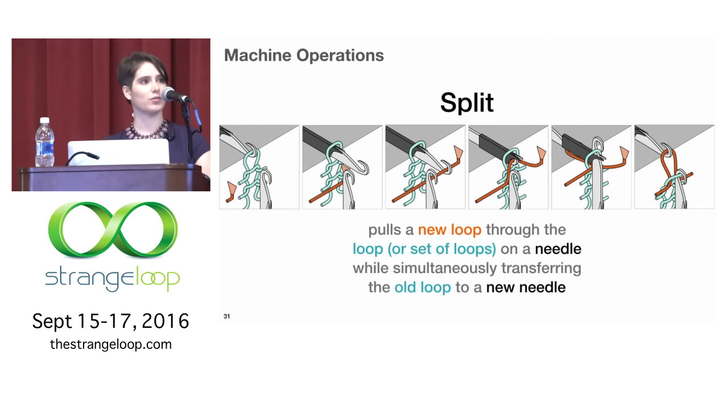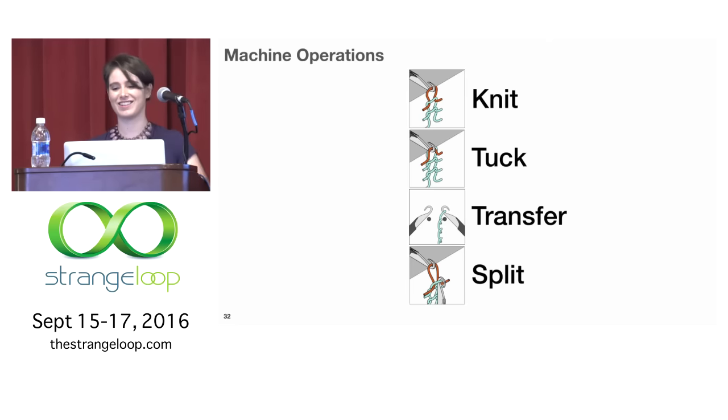We have a fourth operation called a split, which is kind of like you're simultaneously knitting and transferring at the same time. So that uses the other bed because you're transferring the original loop over to the second bed, and at the same time, yarn carrier is laying in a bit of yarn and pulling that into a loop. Very cool. This is helpful because otherwise you don't have any way of essentially retaining a pointer to that first loop because otherwise it would just drop off and you'd never be able to get back to it again. Okay. Four atomic operations. Sounds really simple. You should keep that simplicity in mind because this is when I'm going to start talking about complexity.